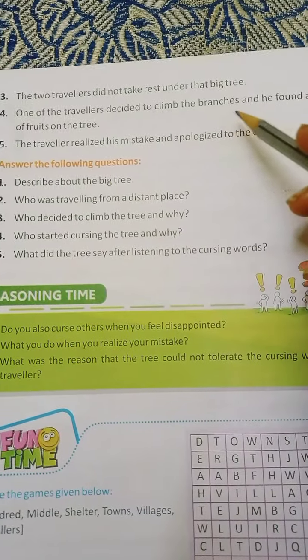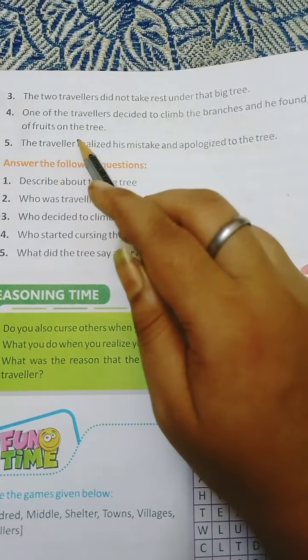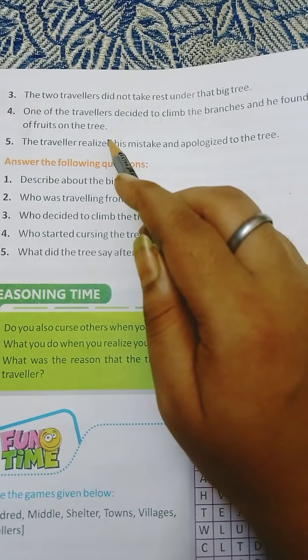Number four: one of the travelers decided to climb the branches and found a lot of fruits on the tree.